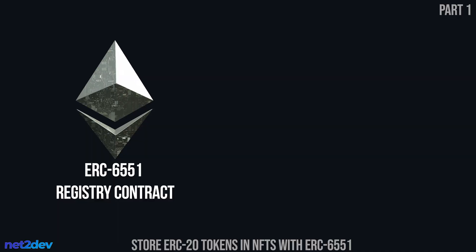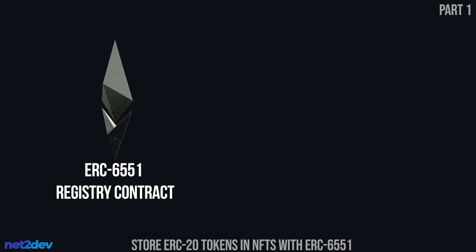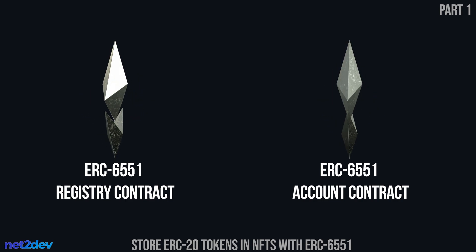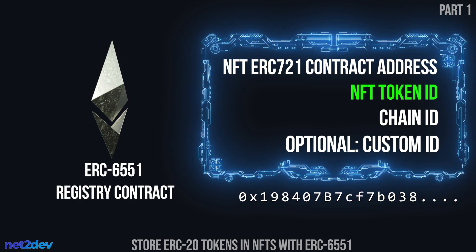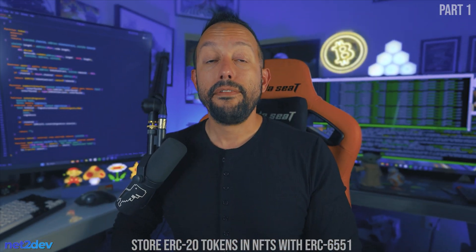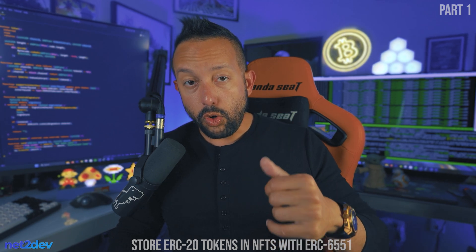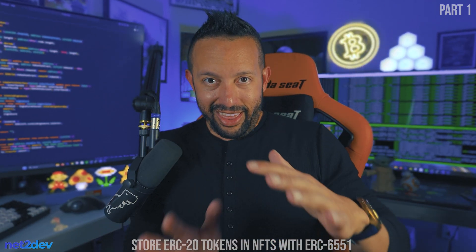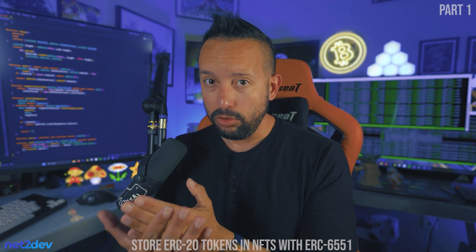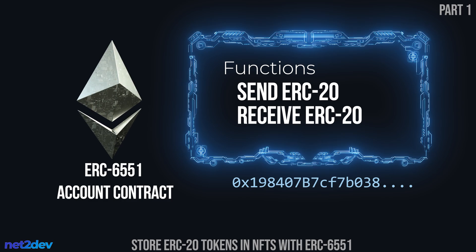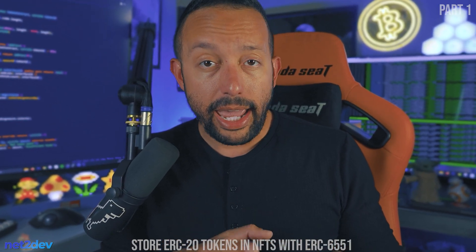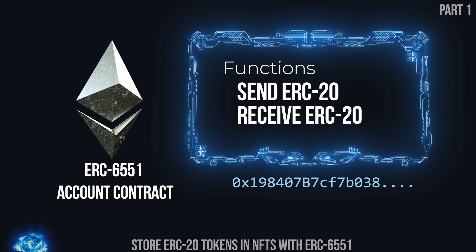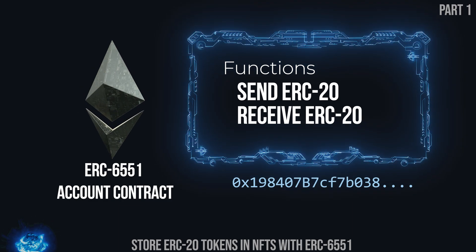There are two main contracts: the ERC-6551 registry smart contract and the account smart contract. The registry is going to register new token-bound accounts — the NFT addresses generated that allow the NFT to hold ERC-20 tokens. We use the ERC-6551 registry smart contract to generate those addresses and register them on the blockchain. The account smart contract is the wallet account — this is how the token-bound account operates. I can add functions onto it to send and receive ERC-20 tokens and perform other mechanisms.